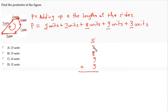Five plus seven is twelve. Twelve plus eight is twenty. Twenty plus nine is twenty-nine. Twenty-nine plus three is thirty-two.